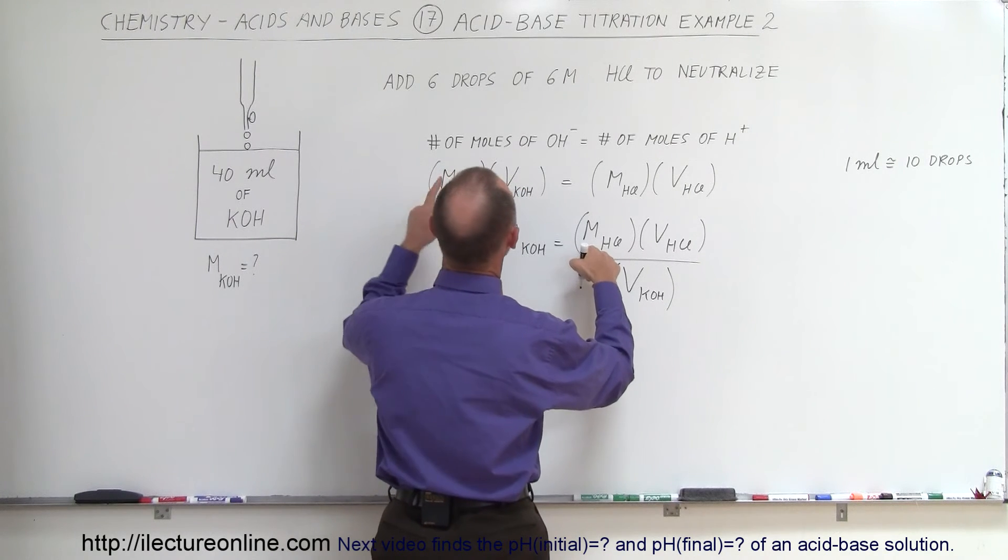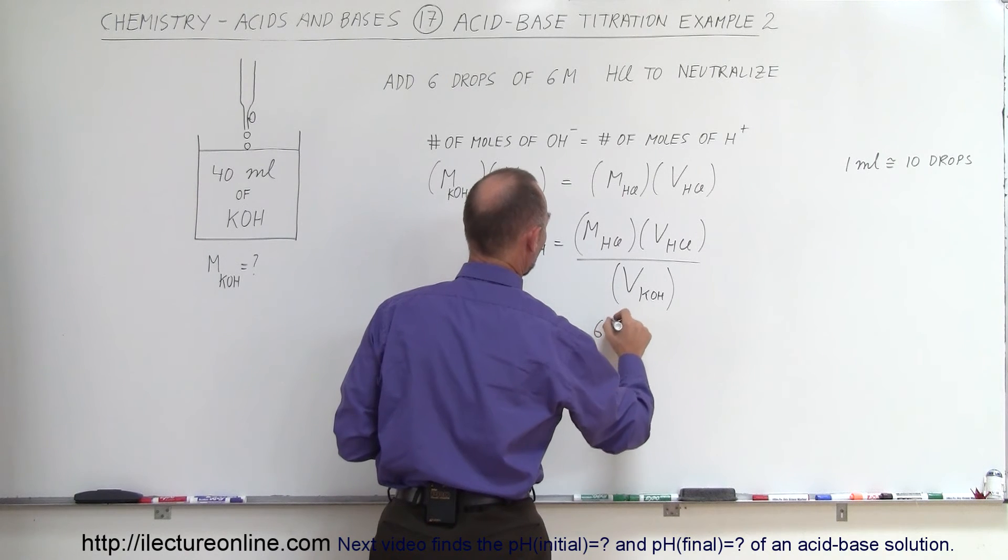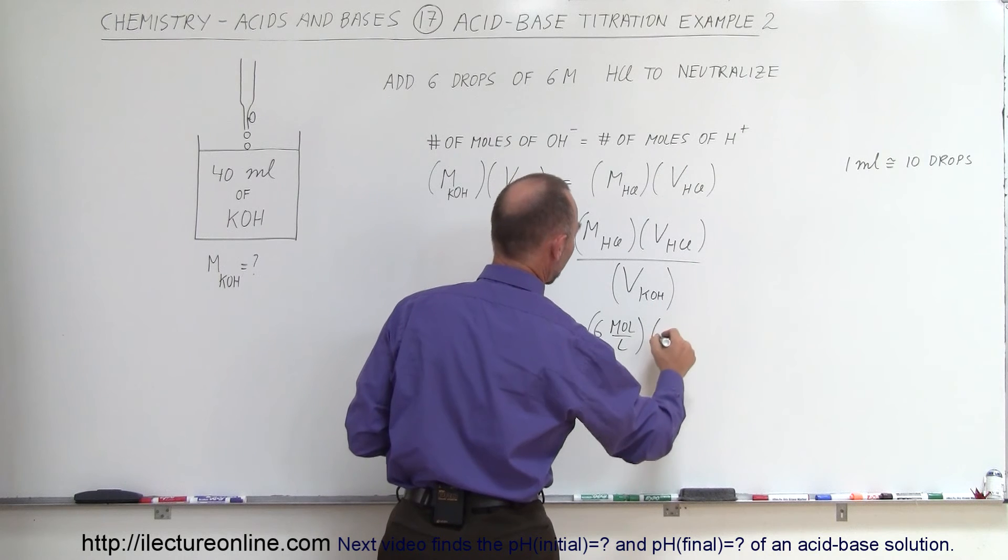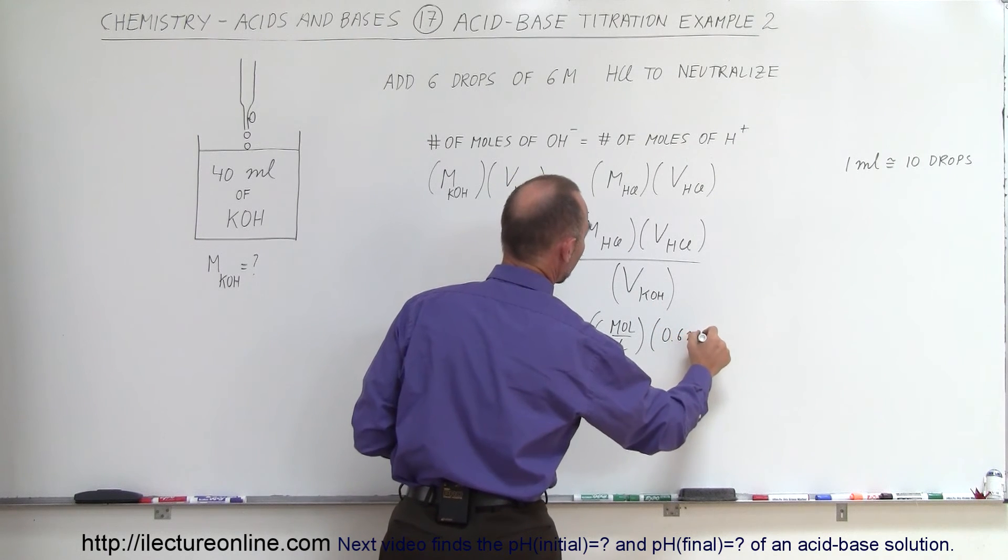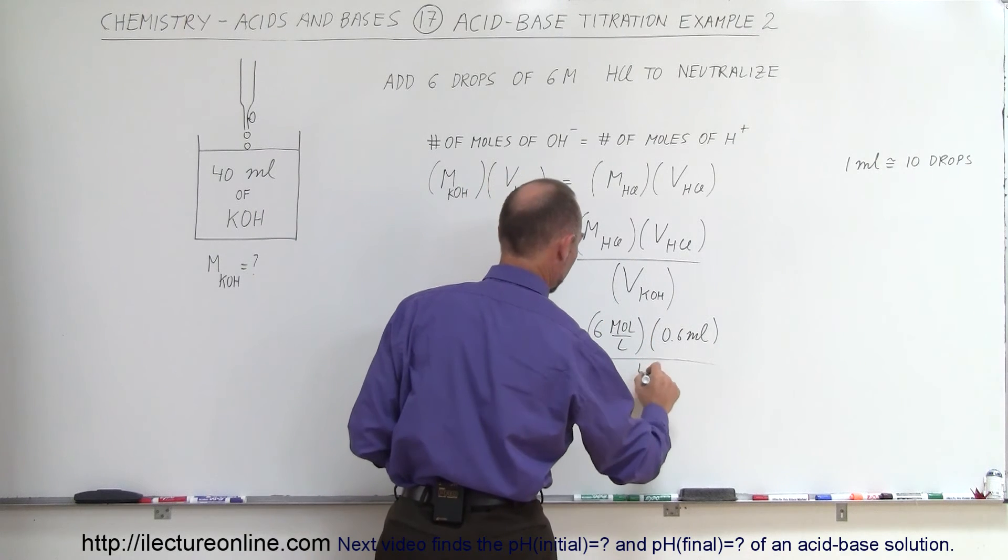the molarity of hydrochloric acid was six moles per liter, times the volume, which is 0.6 milliliters, and we divide that by the volume of the potassium hydroxide, which is 40 milliliters.